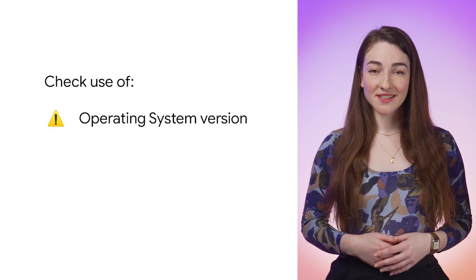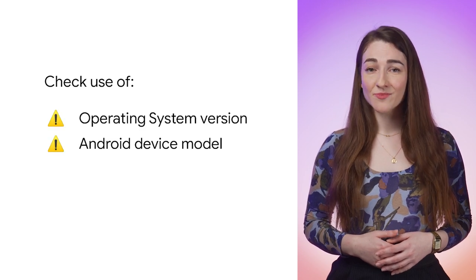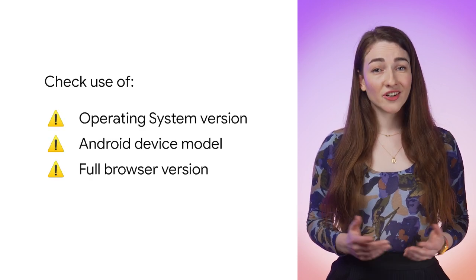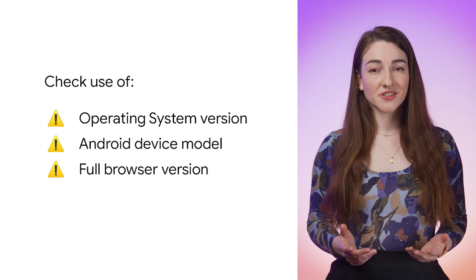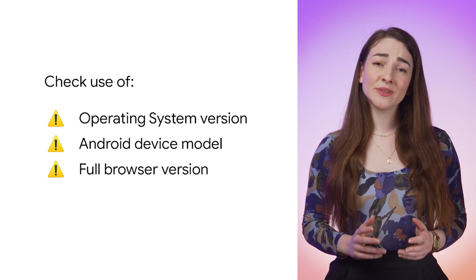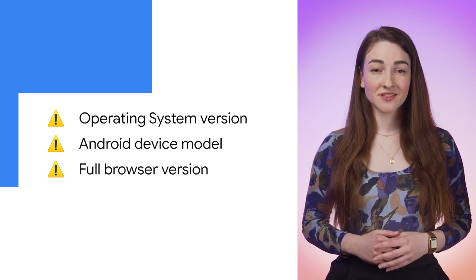Hello there. Chrome is reducing the information shared in its user agent string to help protect user privacy. If you rely on the user agent to detect the visitor's operating system version, Android device model, or detailed browser version, you may need to take action.